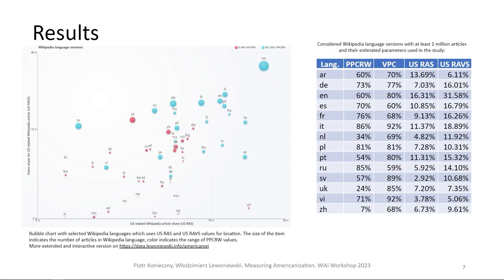I'll stop here on our final slide, which I think you will find interesting. What we see here is a bubble chart and a table. The table displays statistics about the biggest Wikipedia language editions. The bubble chart has the x-axis showing the United States-related Wikipedia article share, and the y-axis showing the views related to that share. The size of the bubbles represents another parameter — the number of articles in that Wikipedia language, so larger Wikipedias have larger bubbles.